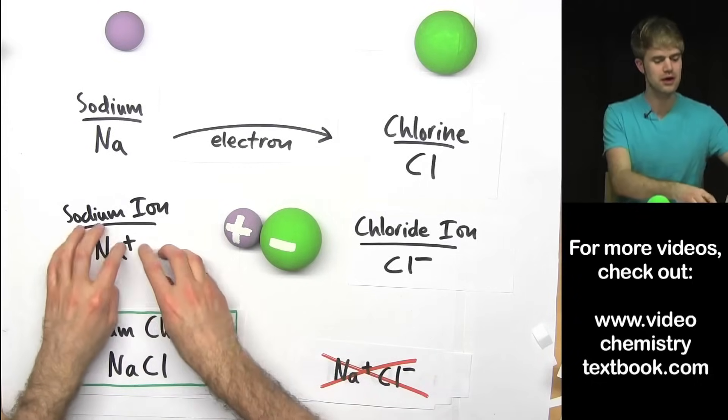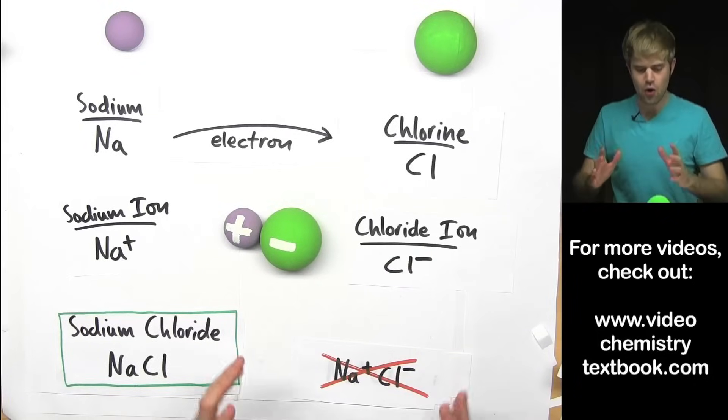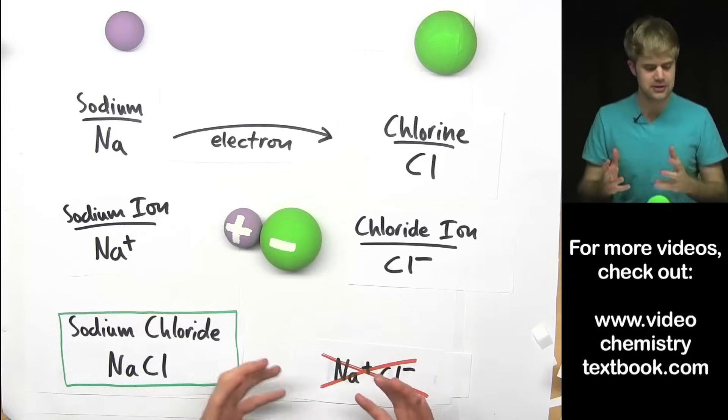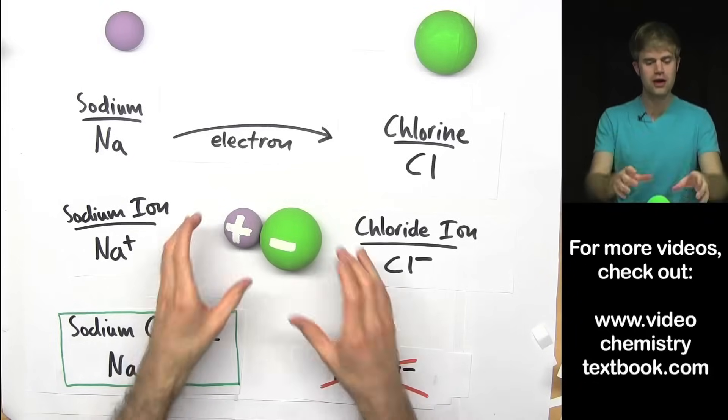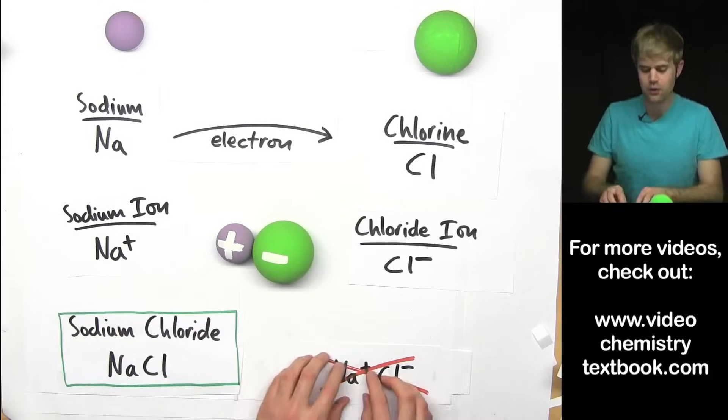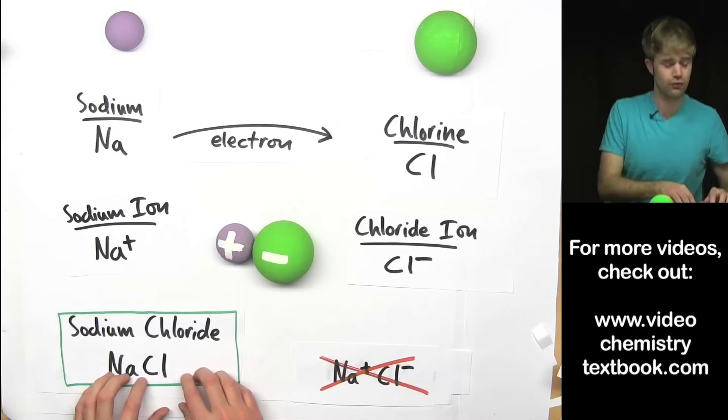It's true that sodium does have a positive charge and chlorine has a negative charge here. But when the two of them come together, the positive and the negative charge, they cancel out. So it's like the whole thing combined doesn't really have any charge anymore. So that's why we don't put the plus and the minus when we're writing the chemical formula.